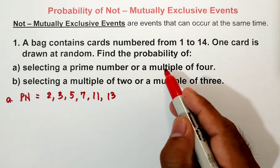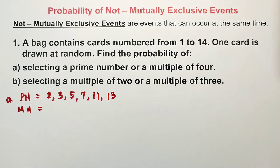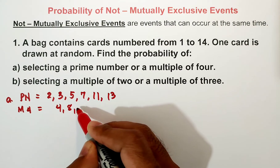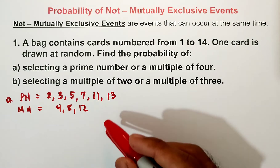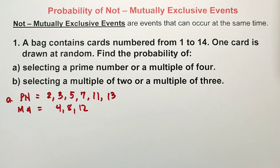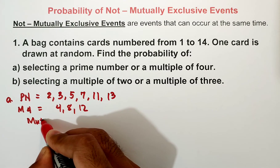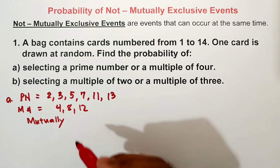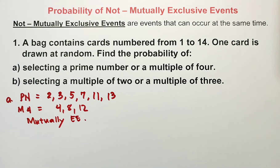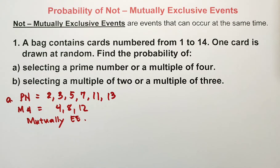For multiples of 4, from 1 to 14 we have 4, 8, and 12. Do they have numbers in common with the prime numbers? No, there are none. Therefore, letter A is a mutually exclusive event since they have no intersection.